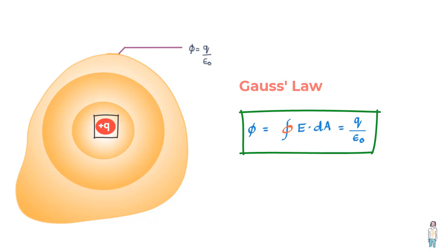Here we use the term net charge to mean that the surface can enclose n number of charges, negative or positive. All we need to do is find the net charge by adding up the value of all charges. And E in this equation is the net total field at each point on the Gaussian surface.